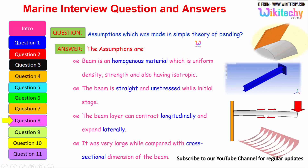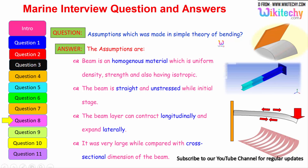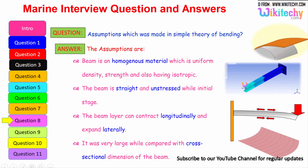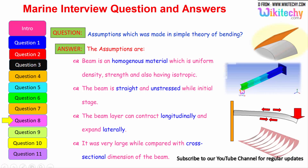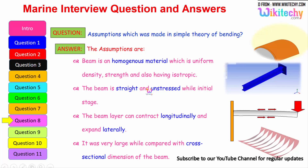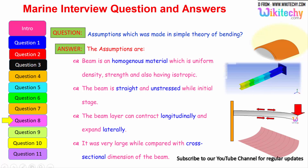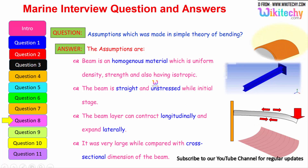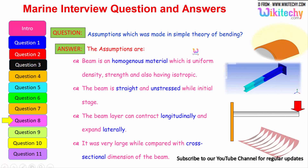What is the assumption made in the simple theory of bending? The assumptions are: the beam is a homogeneous material of uniform density, uniform strength, and is isotropic. The beam is straight and unstressed at the initial stage. The beam can contract longitudinally and expand laterally. The beam's length was very large compared with the cross-sectional dimension of the beam. These are the assumptions we have to make for the theory of bending.